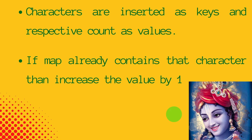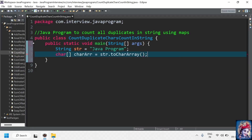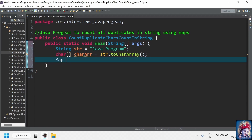We will create a HashMap and store each and every character of the string into the HashMap as keys and the respective count as values. We need a for loop to iterate over each character. First, we check whether the respective character is already present in the HashMap. If it is not present, we add that character with a value of one. If it is already present in the map, we increase the value by one. Let's declare a map with character as key and integer as value.